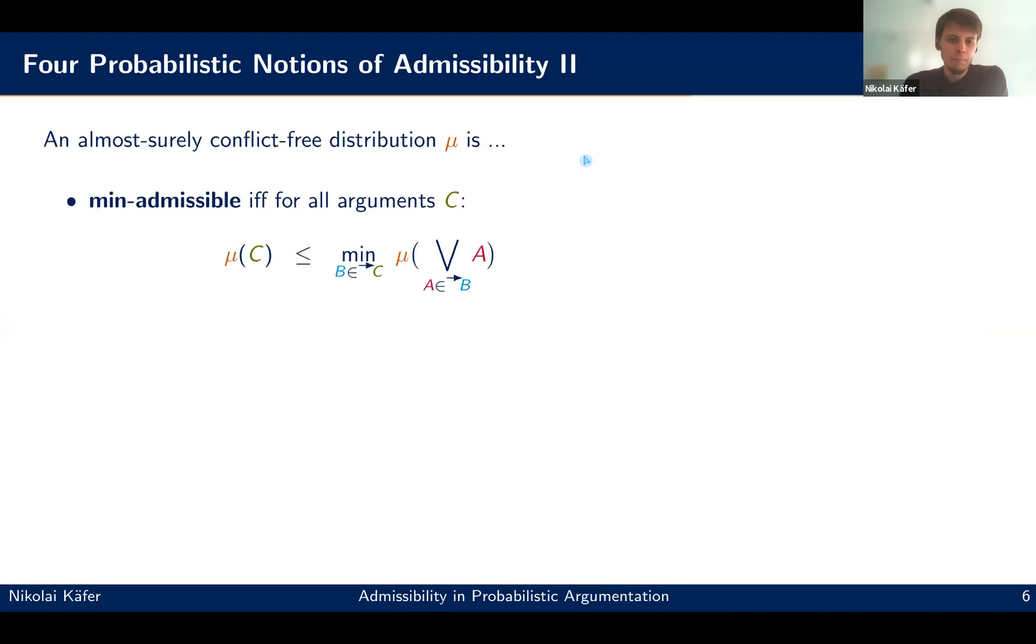The second idea is to use a bound on the probability. So basically we want to bound the probability here of an argument C by the probability that the argument is defended. So for min admissibility, we consider the attackers of an argument individually. And for each of those here, we look at the probability that the argument is attacked here by looking at the probability that at least one of the attackers holds. And then the minimum for all the attackers here is used as the upper bound. And this is already stricter than weak admissibility, but also implies weak admissibility.